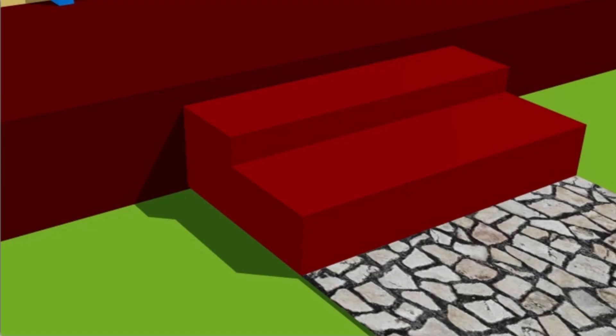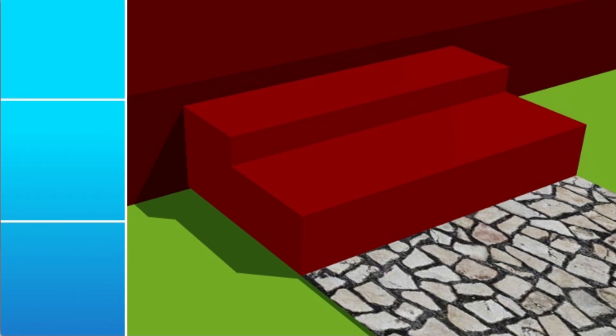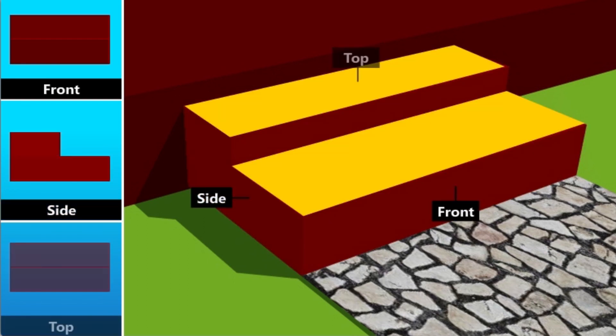Similarly, let us observe the stairs from different angles. Like in the case of the house, we observe that the view of the stairs is different when observed from the front, side, and top.